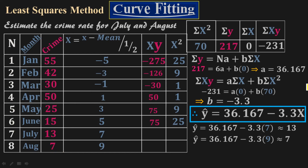That was one practical problem we face in daily life. You can solve many more problems using this method. Remember, this is an approximation method — there is no perfection. We estimate something for upcoming months or years. That's how the least squares method has a tremendous role in our daily life.